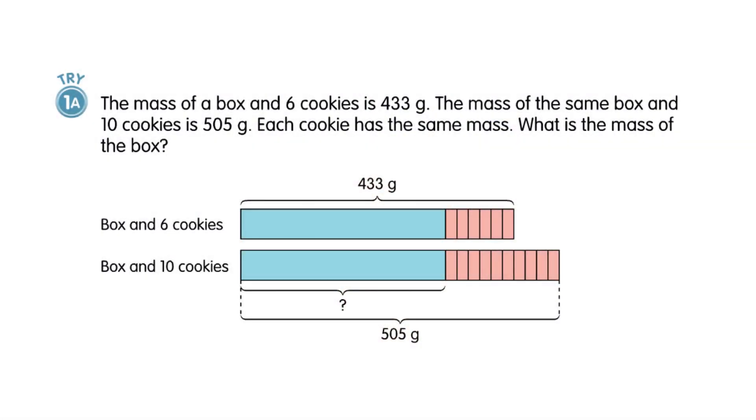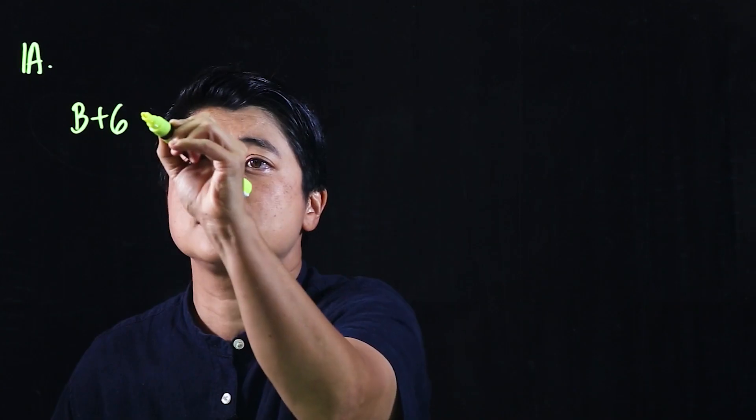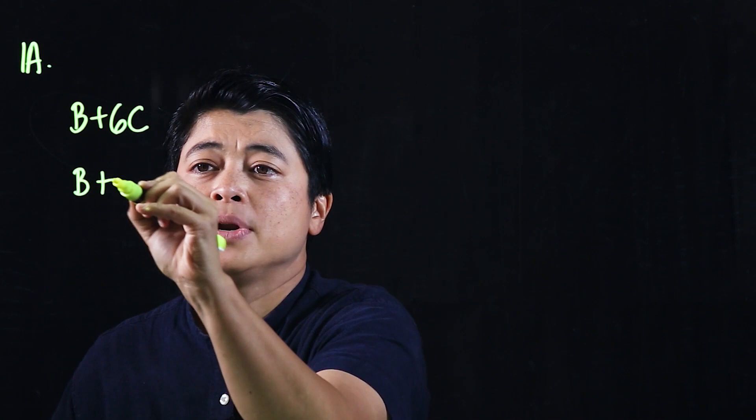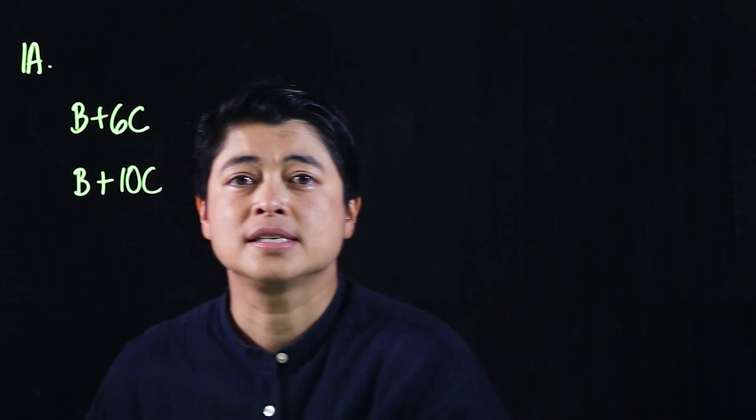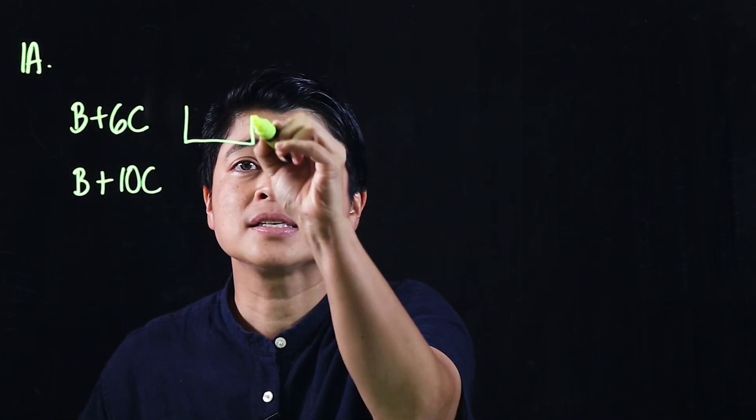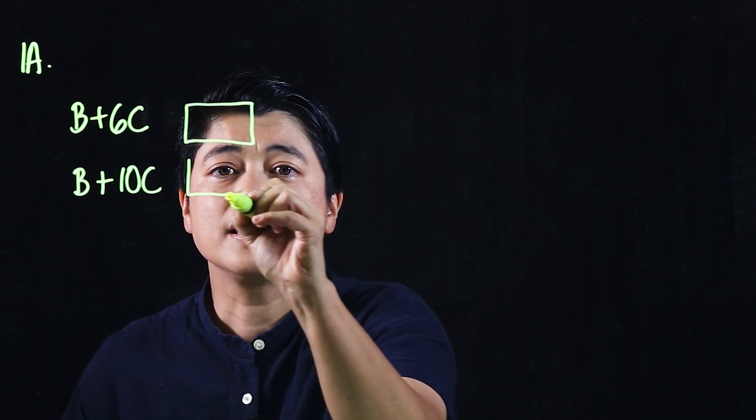Page 46, problem 1A says: The mass of a box and six cookies is 433 grams. The mass of the same box and 10 cookies is 505 grams. So this is a compare model. I'm going to start with that. This is the box plus six cookies, and this is the box plus 10 cookies.